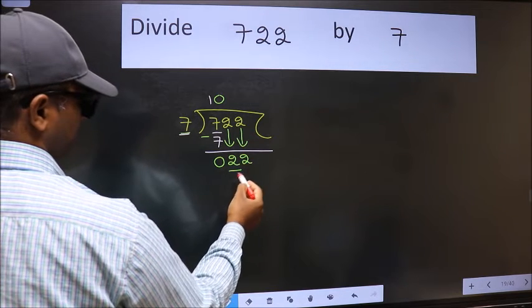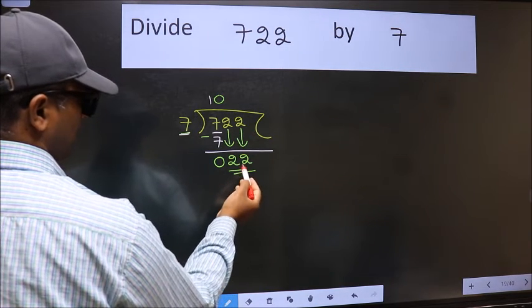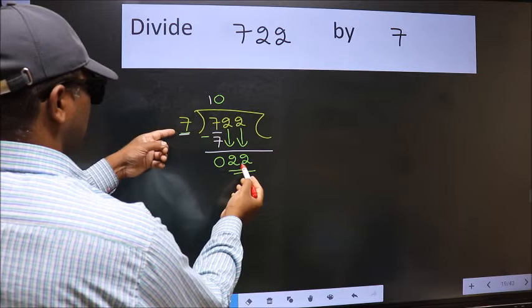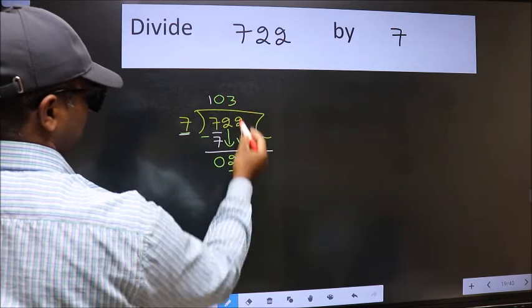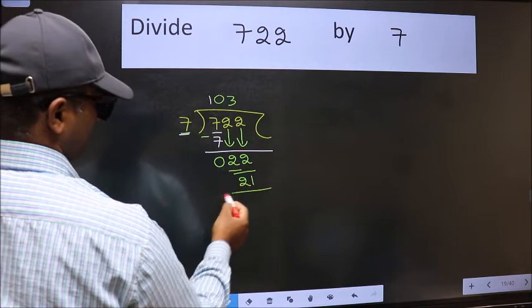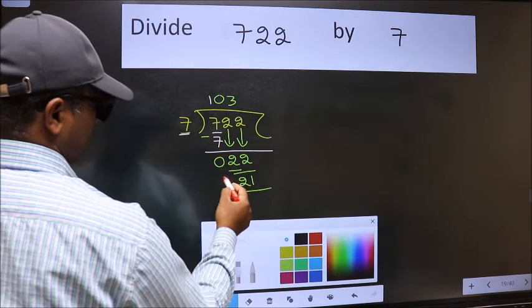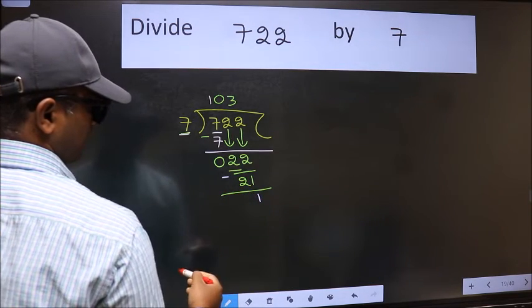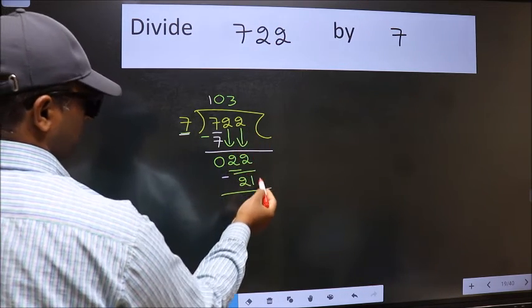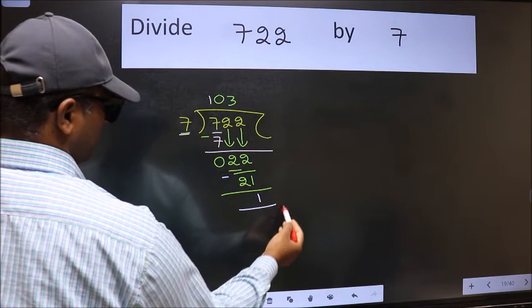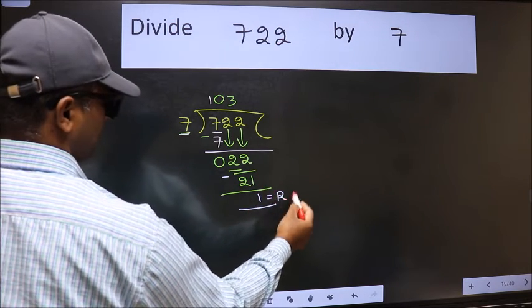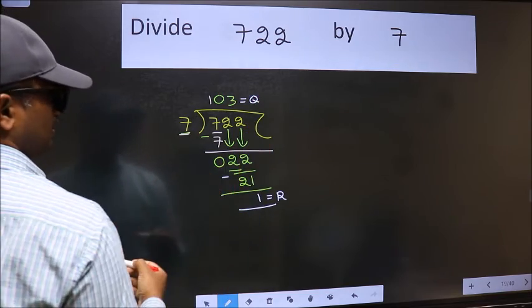Now we have 22. The number close to 22 in the 7 table is 7 times 3 equals 21. Now we subtract and get 1. No more numbers to bring down, so we stop here. This is our remainder and this is our quotient.